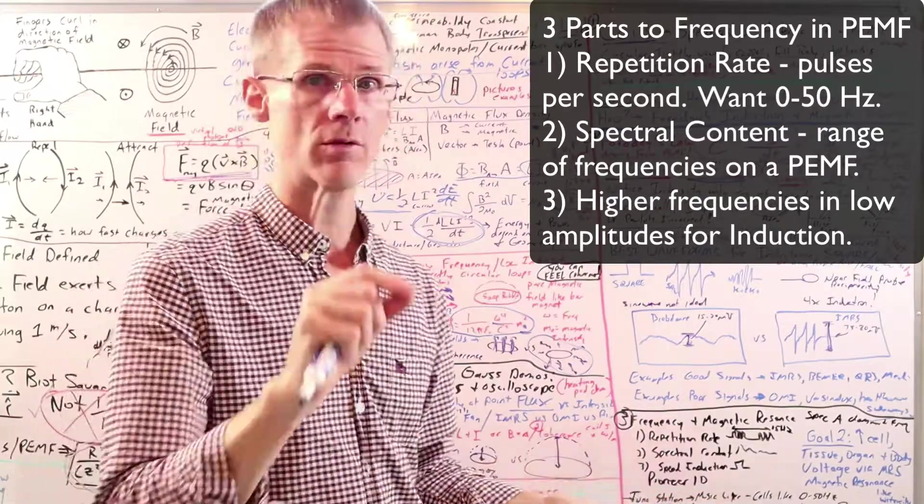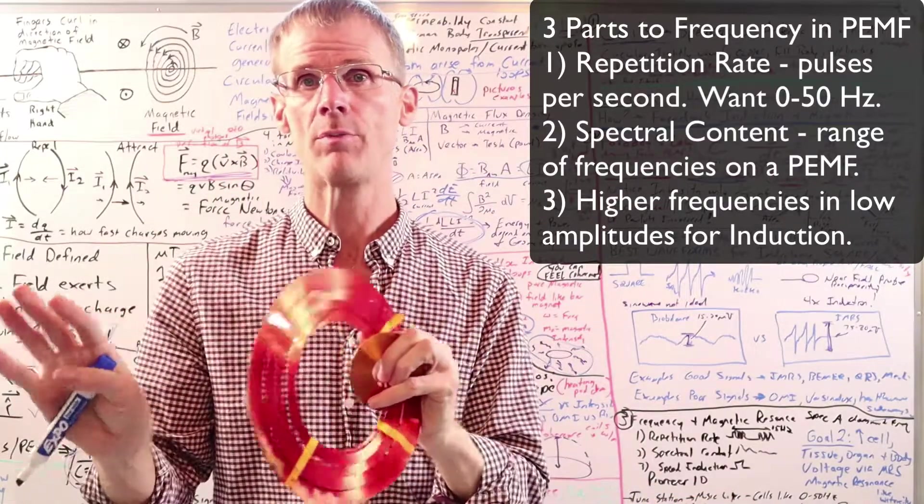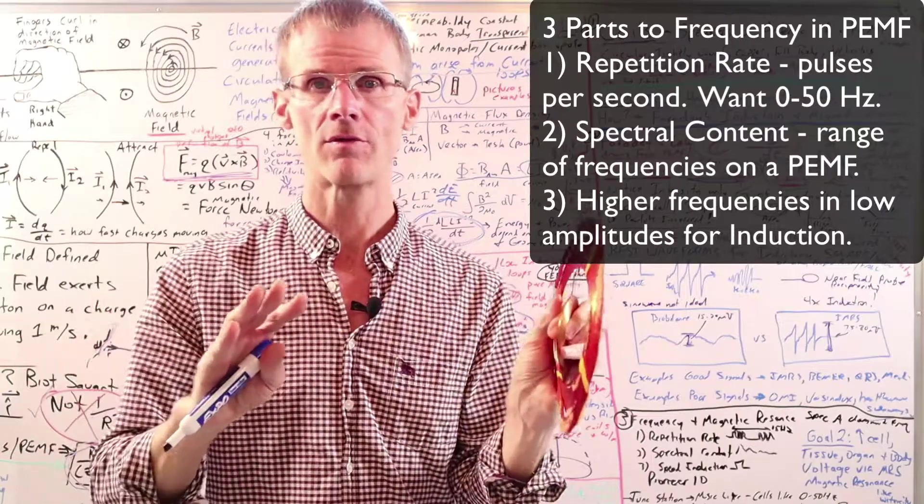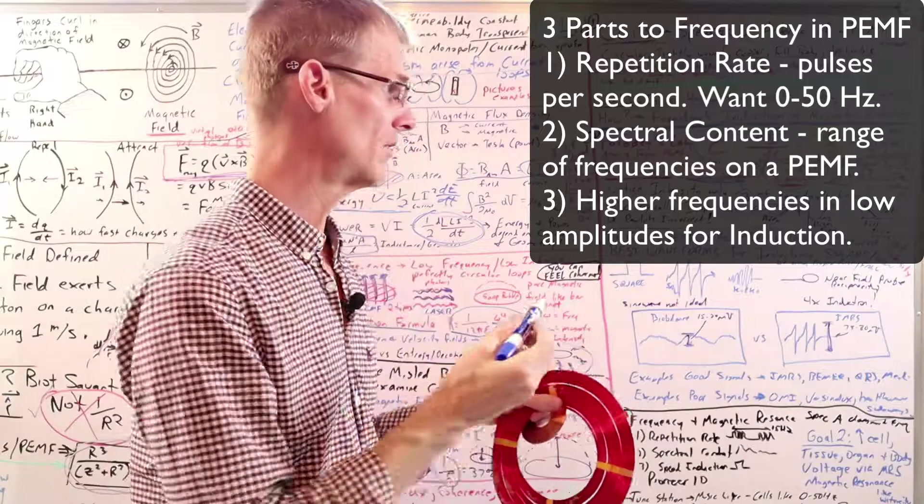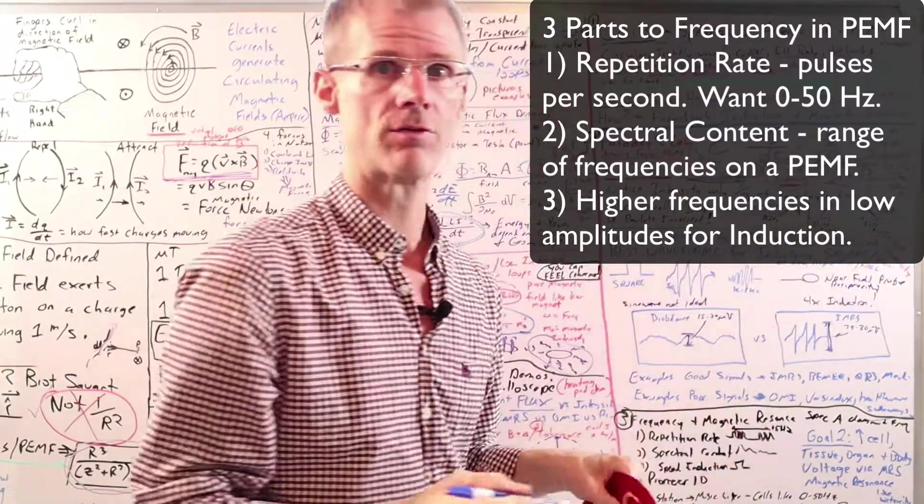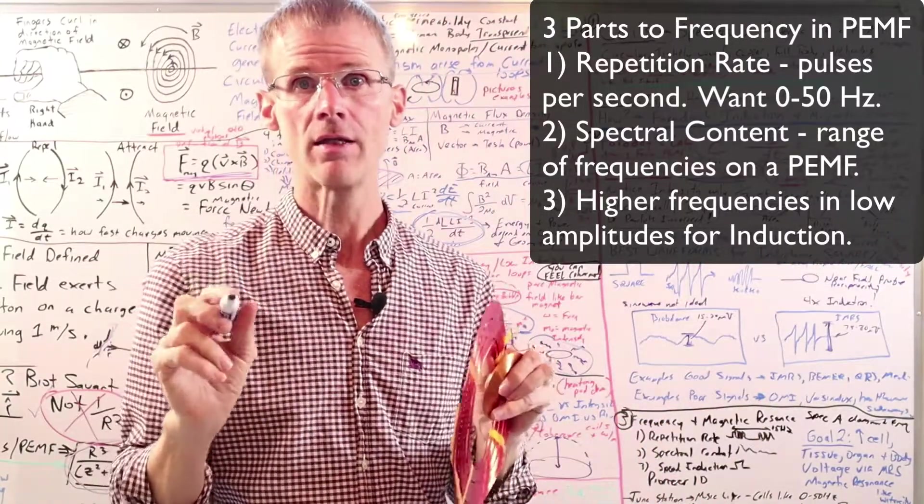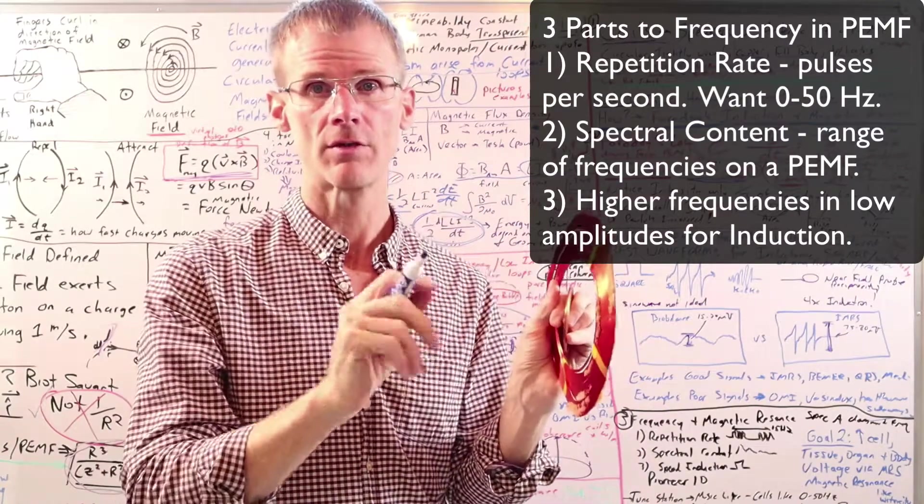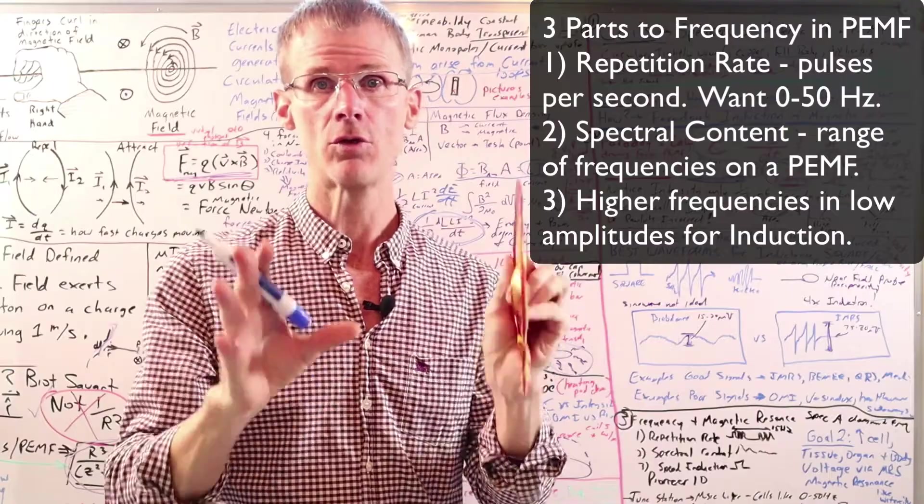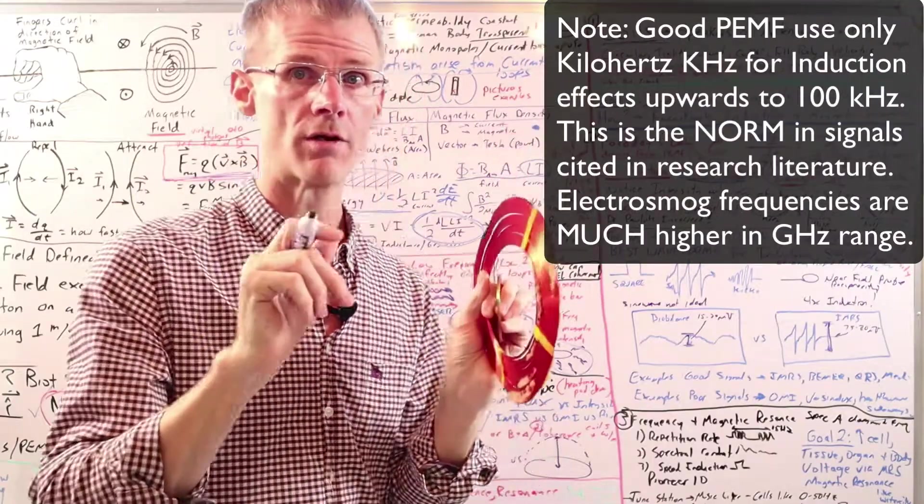And then the third component of frequency is you do need higher frequency. So some of these videos pointing out like that the IMRS and maybe some other devices have high frequencies, that's actually a compliment because the higher frequencies are what creates the sharp rise and fall time. It's called slew rate. You can't get a high slew rate with low frequencies. In fact, in high definition music and high definition television, it's the higher frequencies that give you a clear picture.